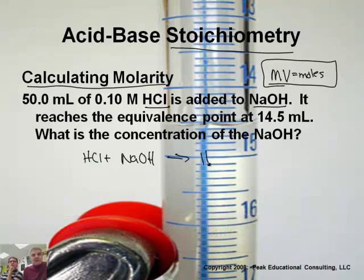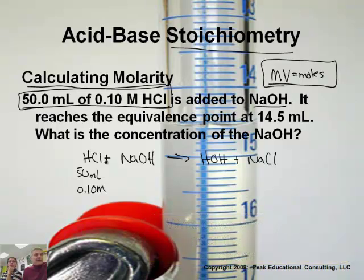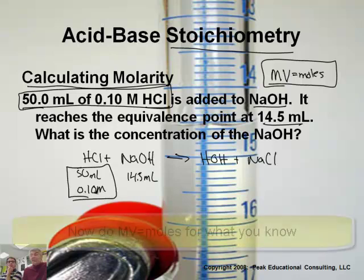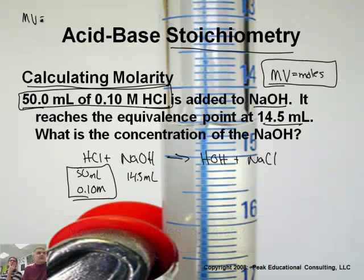All right. So, what do I know? All right. I have 50 milliliters of 0.1 molar HCl. So, I'm going to write that down. 50 milliliters of 0.10 molar HCl. I'm writing it under the HCl. And it takes 14.5 milliliters of sodium hydroxide. So, if I do this, the thing I know the most about is the hydrochloric acid. I'll start with the thing you know most about. So, I'm going to do that up here, because I don't know, space, I think. So, I'm going to say M times V equals moles.